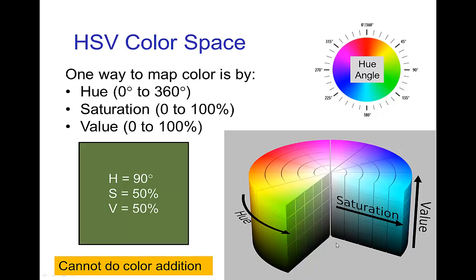And then finally, value with zero being the darkest and 100% being the brightest. So this green swatch here would be an example of a hue at a 90-degree angle, 50% saturation, 50% value. Now this is very convenient for mapping single colors. The only reason we don't use it more is that we can't do color addition using this type of diagram. For color addition we need the CIE diagram that we've been using.